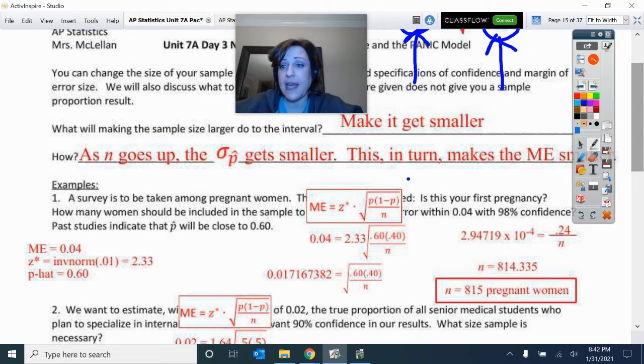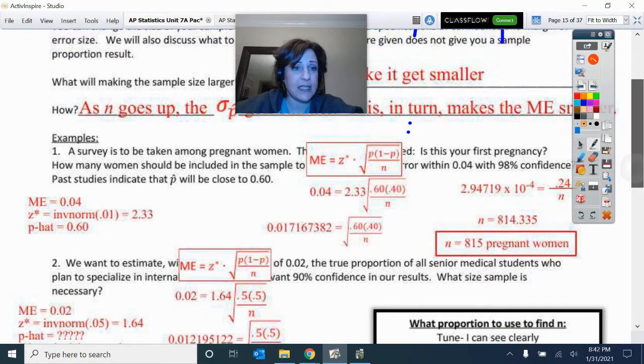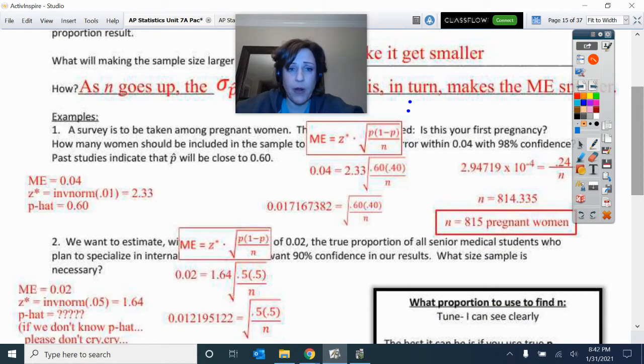So we also know that as n goes up, this makes our standard deviation smaller to make a smaller sample size. So here is a couple of problems.